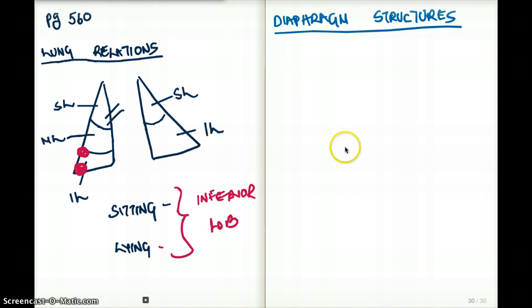Now the next topic is the diaphragm structures. The first thing we need to be talking about is T8, T10, and T12. The diaphragm is perforated at different levels of the vertebra. At T8, some structures come out. At T10, some structures come out. And at T12, some structures come out.